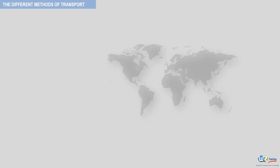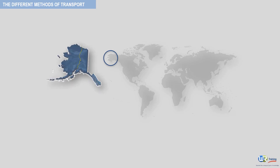The Alaskan oil fields are another example of the use of a dual transport mode. The crude goes by pipeline to Valdez, from where it is shipped to the western seaboard refineries or through the Panama Canal to the refineries in the southern and eastern states.